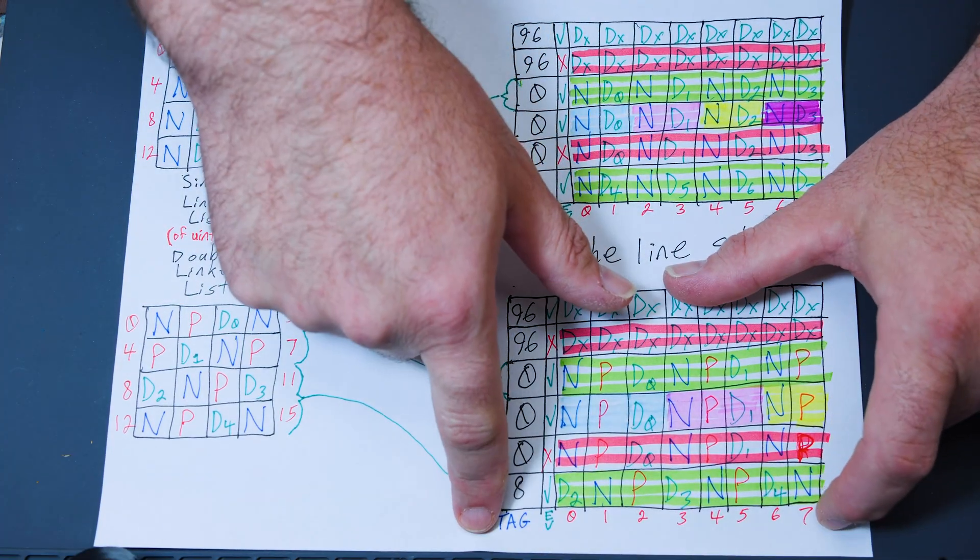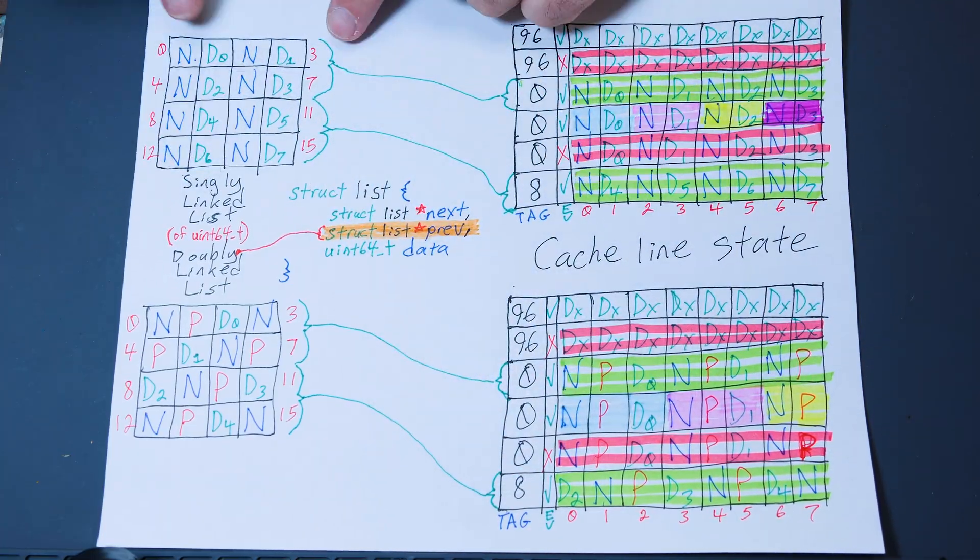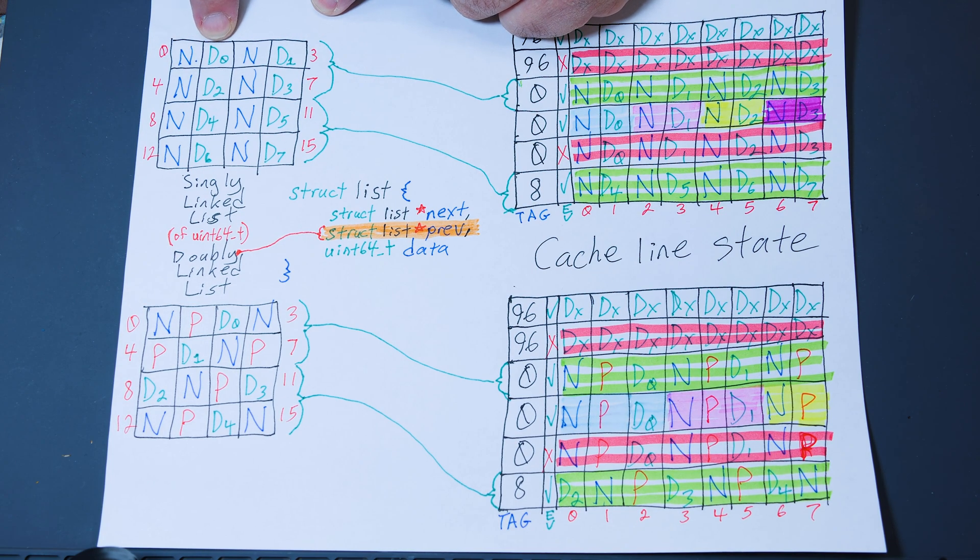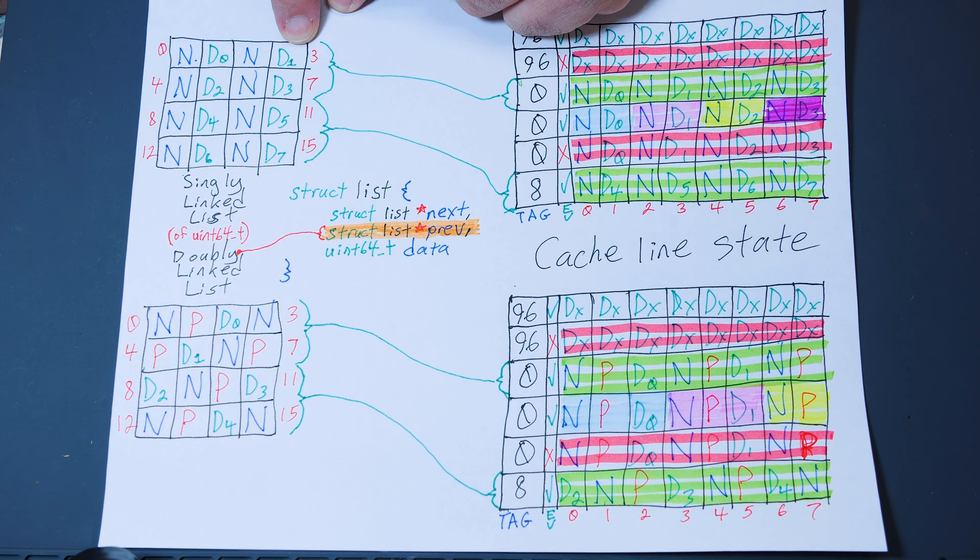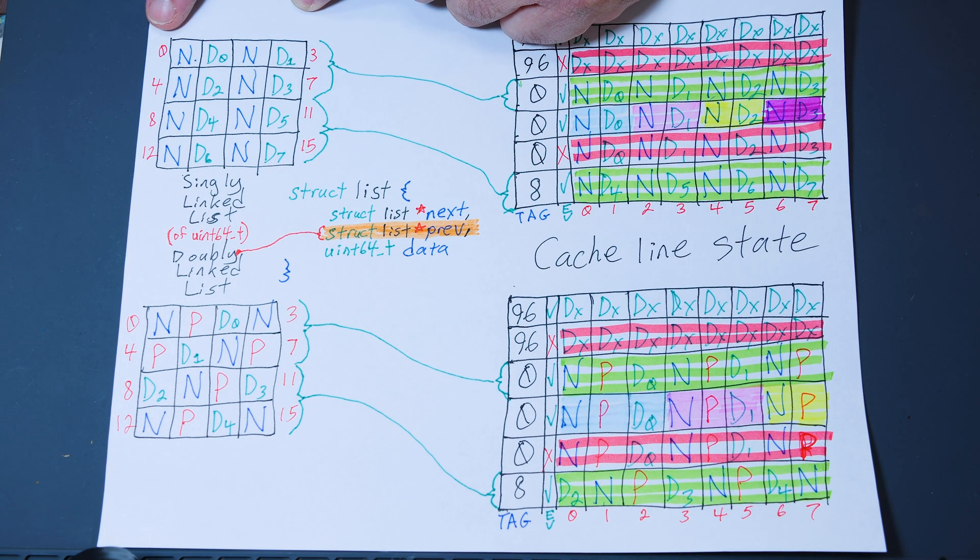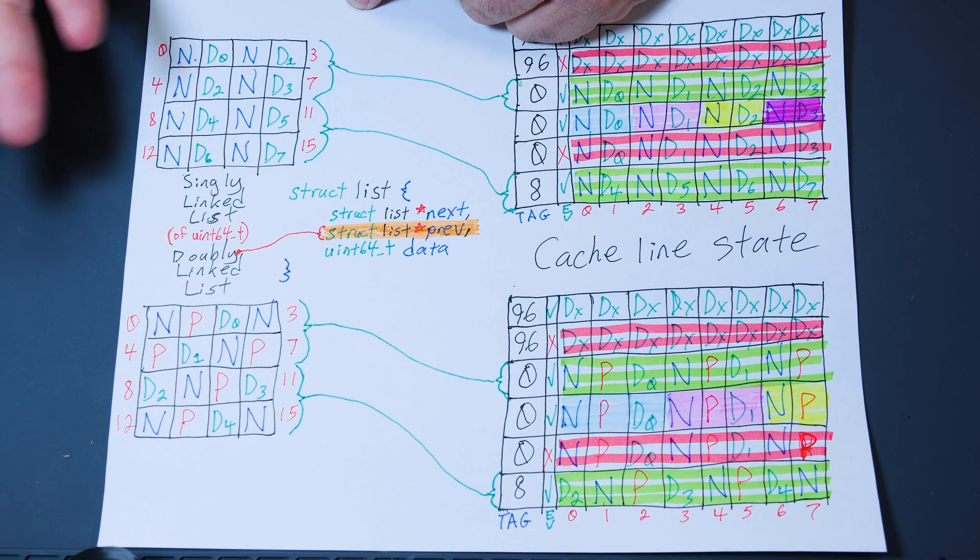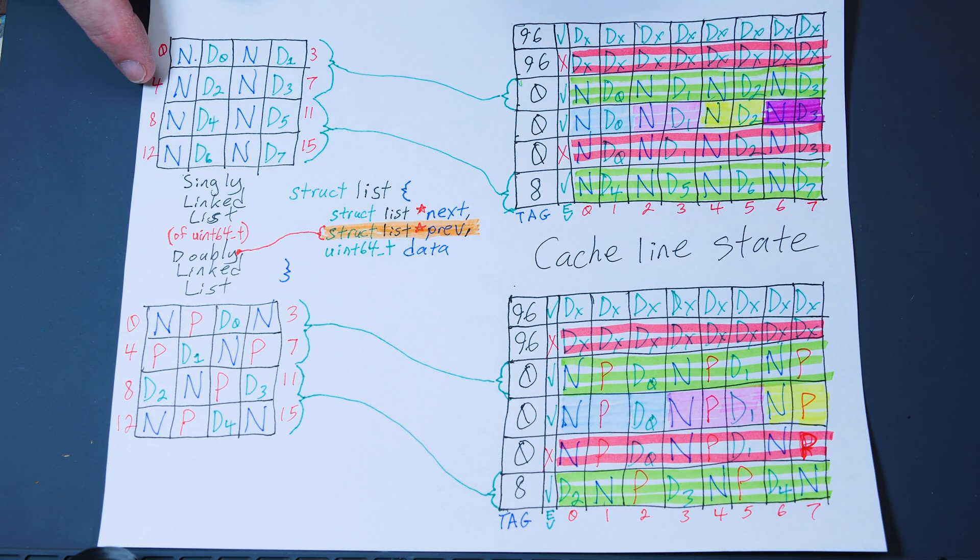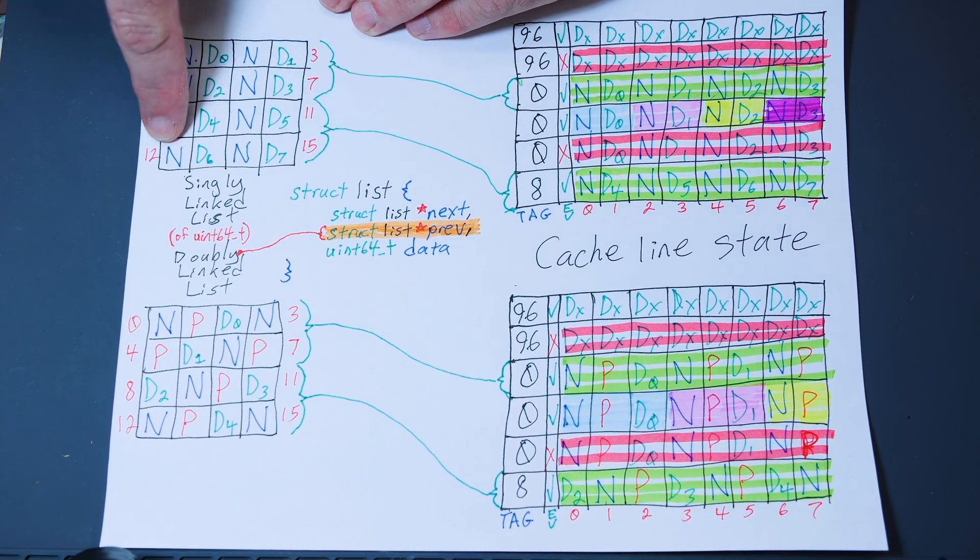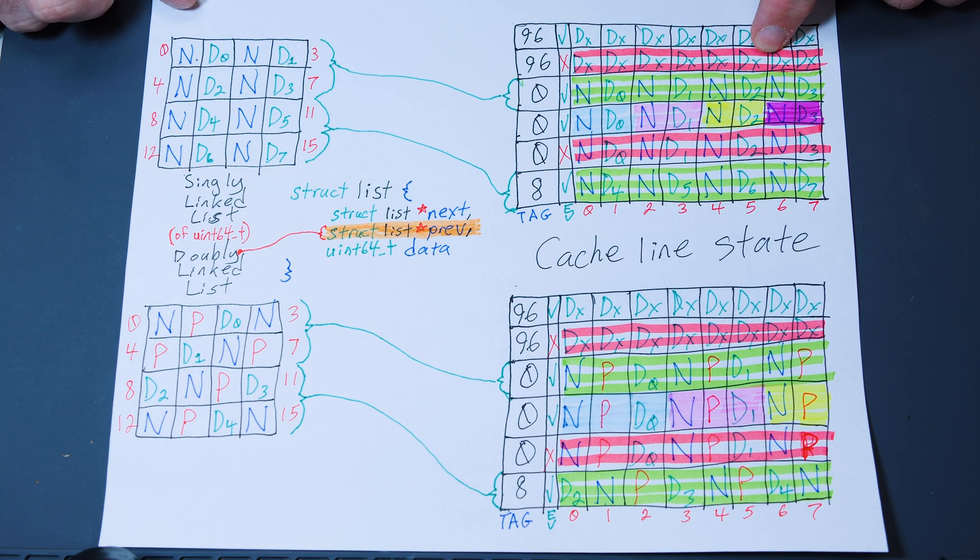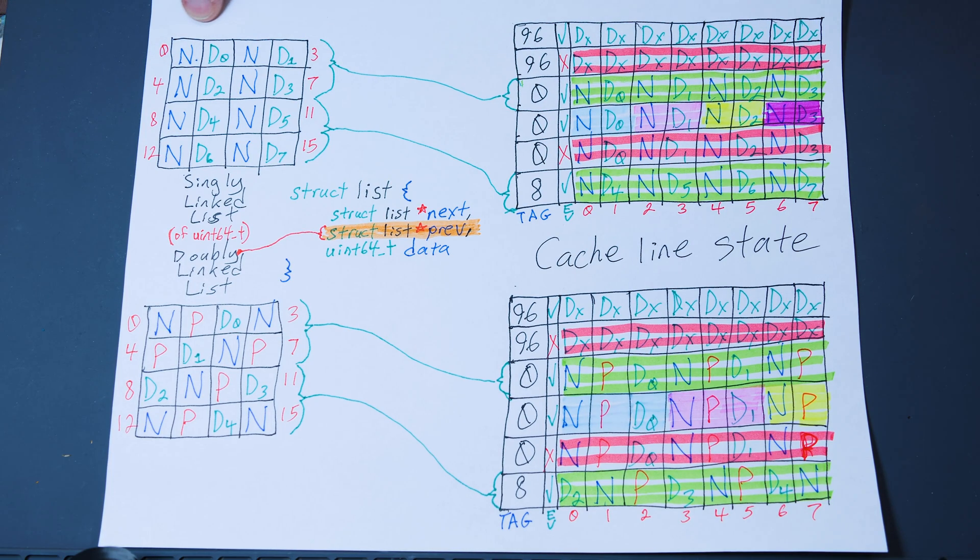And then over here, these are cache line states. We'll go over these in a minute. So over here, you have a singly linked list. You've got pointer to the next item, data zero, pointer to the next item, data one. And the data is just 64-bit integer. So we're kind of assuming that all of these things are eight-byte pointers, 64-bit. So next, data zero, and so on. And you can see here, it's fairly obvious that one cache line holds eight of these items. So eight of these eight-byte items is a 64-byte cache line.